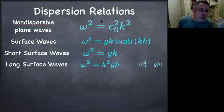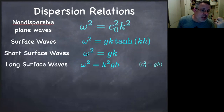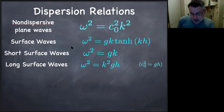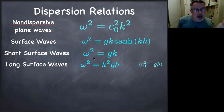Here are some of the dispersion relations we've talked about so far. We've got one for non-dispersive plane waves, and a particular example are long surface waves or shallow water waves, where the square root of gh is the phase speed itself. For short surface waves — deep water waves — we get omega squared equals gk. The surface waves for both short and long, or deep and shallow water, gives us this tanh of kh factor.